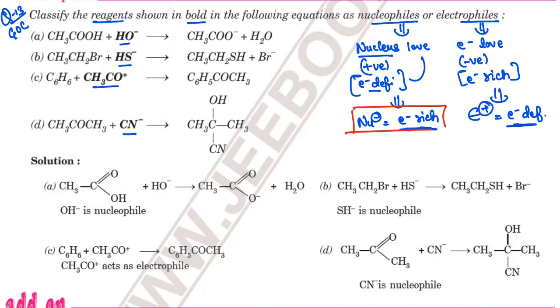To summarize: the nucleophile species is electron rich, and the electrophile is electron deficient. So we have to look at the given reagents and determine whether each one is electron deficient or electron rich.